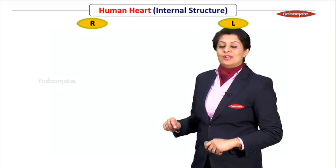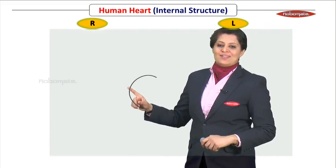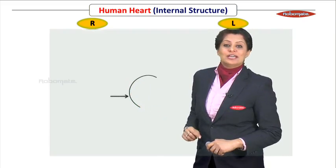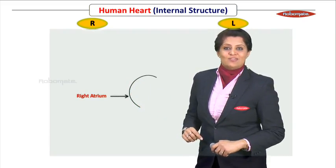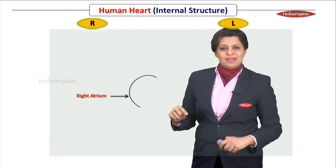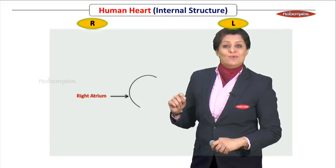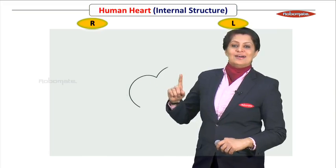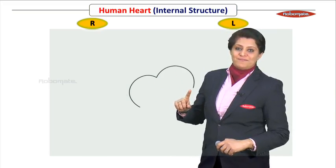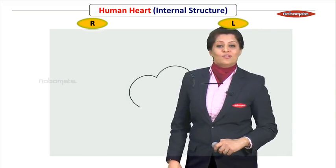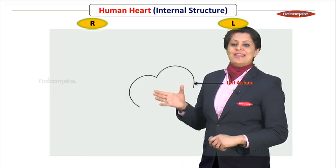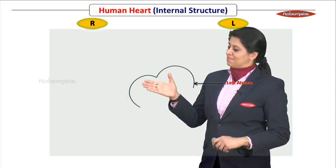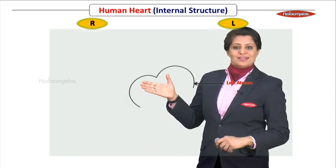Let's start drawing our diagram by first drawing the upper chambers. The right atrium — draw the right atrium first. Similarly, a beautiful curve for the left atrium also. Now this completes the upper two chambers of the heart.